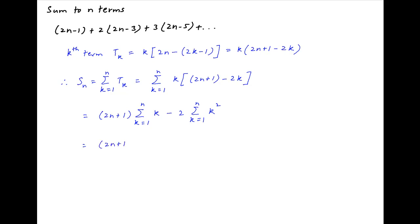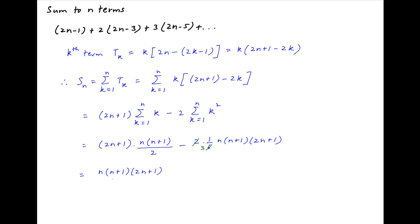This is equal to (2n plus 1) times summation k, which equals n(n+1)/2, minus 2 times summation k squared, which equals n(n+1)(2n+1)/6. This simplifies to n(n+1)(2n+1)/6 multiplied by (3 minus 2), which simplifies to n(n+1)(2n+1)/6, which is the required answer.